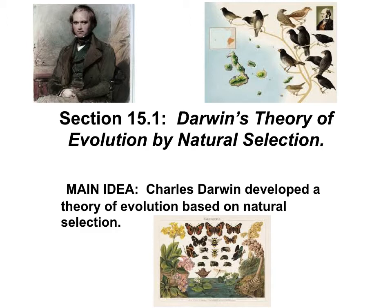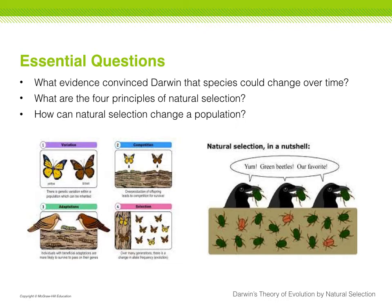Section 15.1 is all about Darwin and how he came up with his theory of evolution by natural selection. The main idea for this section is Charles Darwin developed a theory of evolution based on natural selection. There are three essential questions: What evidence convinced Darwin that species could change over time? What are the four principles of natural selection? And how can natural selection change a population? Use these questions to self-assess how you are understanding this section.